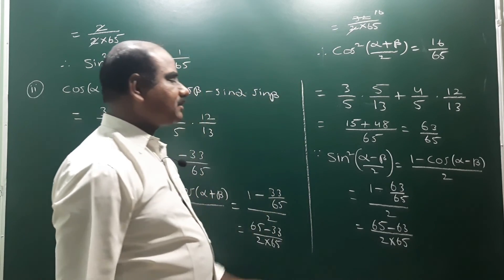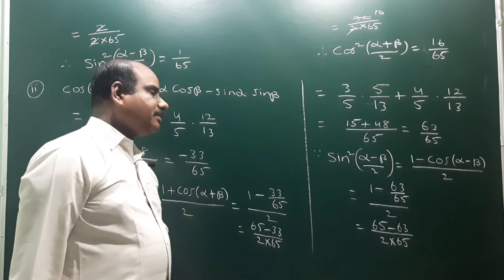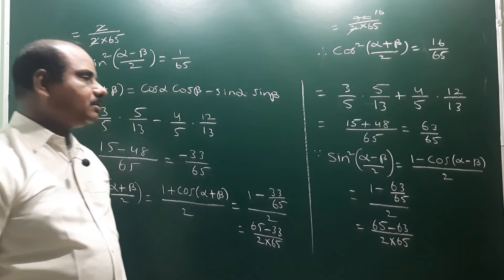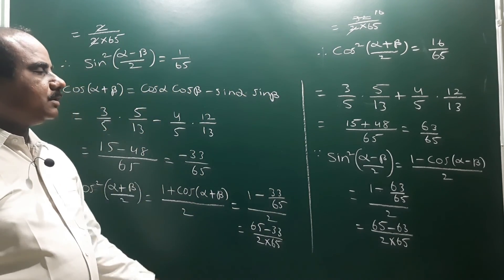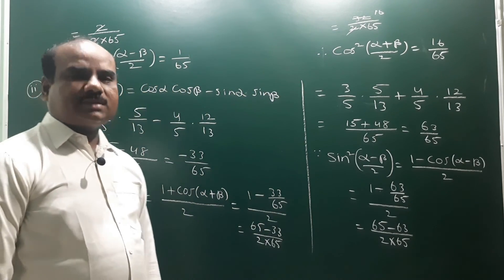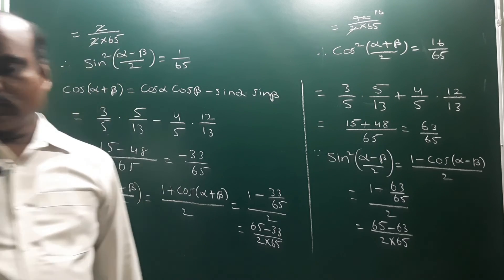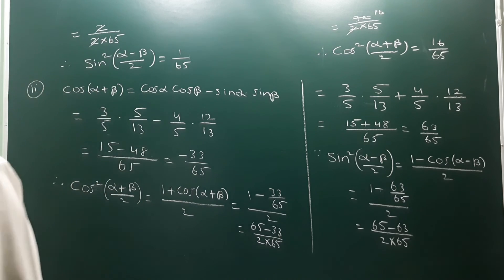So the final answers are: sin²((α−β)/2) = 1/65 and cos²((α+β)/2) = 16/65. Thank you.